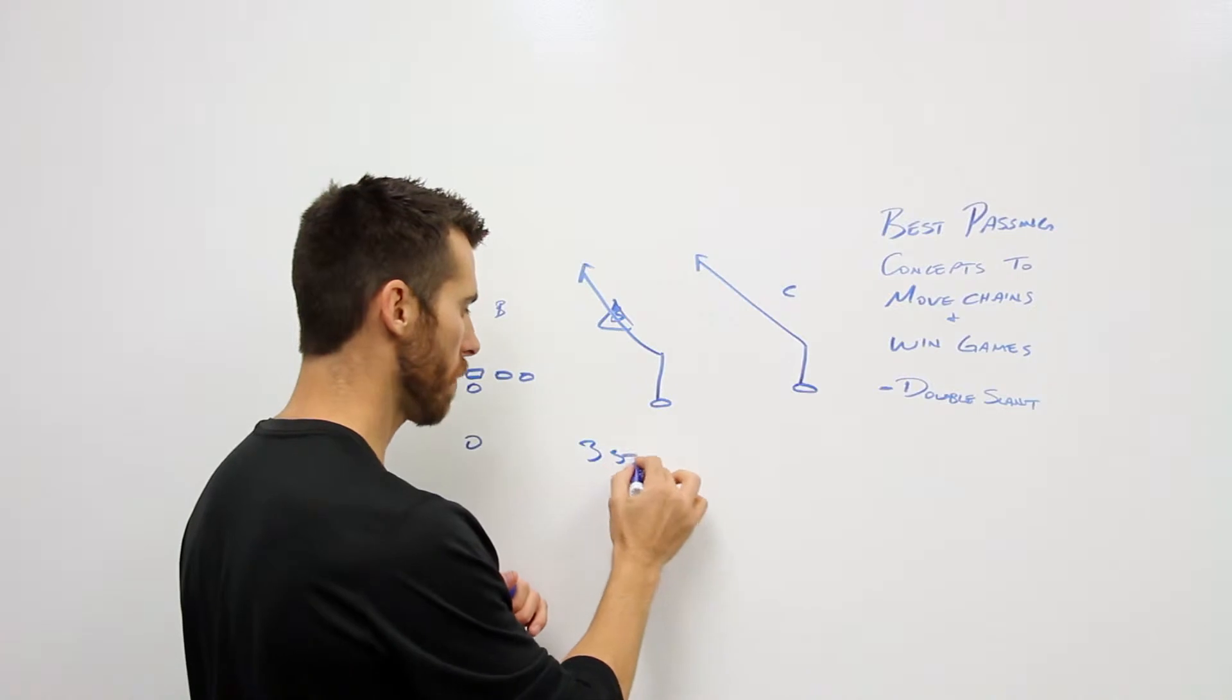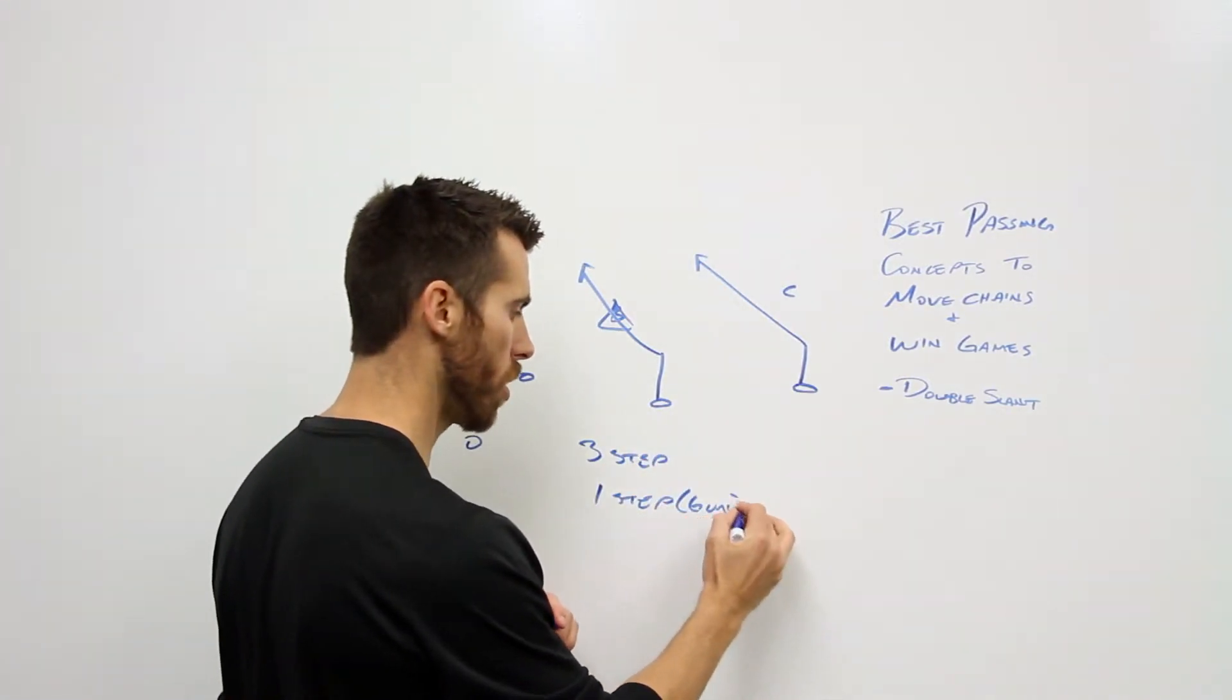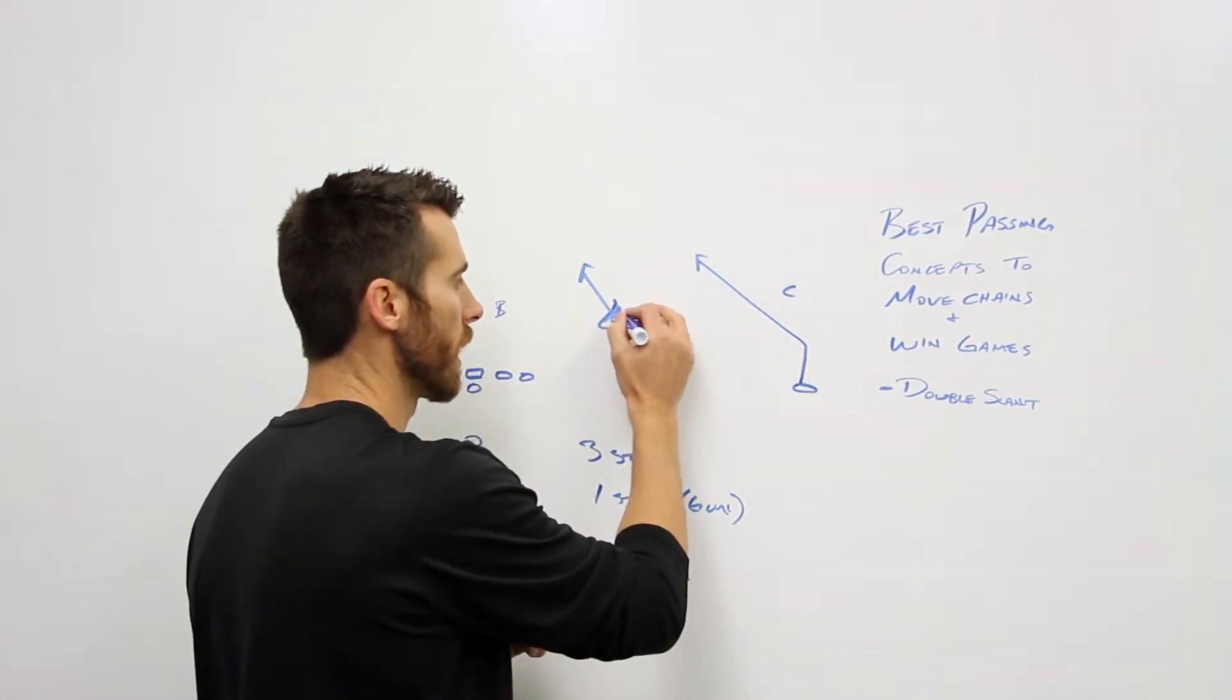This is a three step drop combination if we're under center. It's one step if we're in gun. We want to throw the ball in less than 1.5 seconds from snap. And we want to make this guy wrong right here.